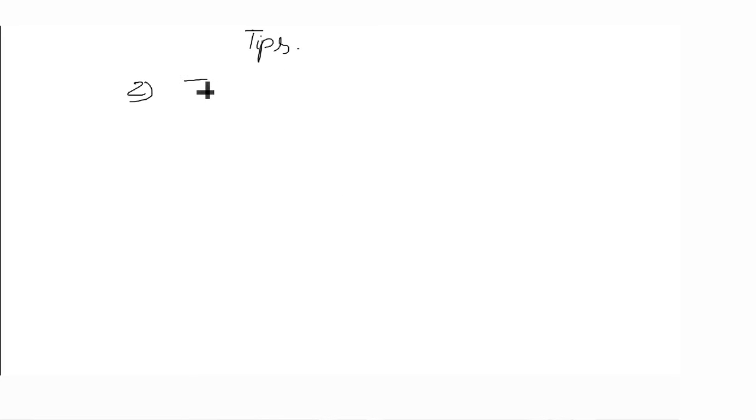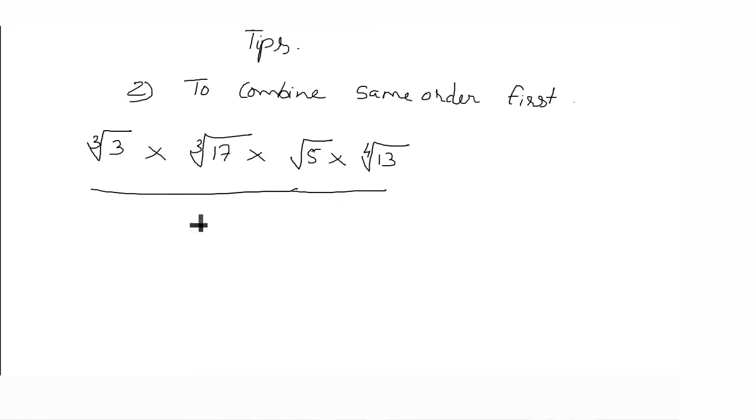Second tip, we will find that whatever surds of the same order, we will combine them. A complex example. Cube root of 3 into cube root of 17 into square root of 5 into 4th root of 13, whole upon square root of 20 into 4th root of 26 into cube root of 27. Here cube root as well as square root and 4th root.